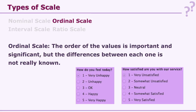Another example: 'How satisfied are you with our services?' The answers could be very unsatisfied, somewhat unsatisfied, neutral, somewhat satisfied, and very satisfied. There are 5 categories and there is a sequence — from very unsatisfied to very satisfied — but we cannot really say the distance between any two categories is equal. This kind of scale is called an ordinal scale.